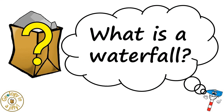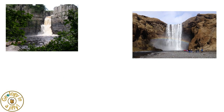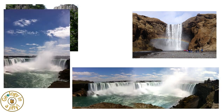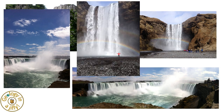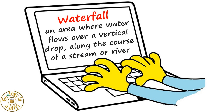What is a waterfall? When one thinks of a waterfall, we often think of sheets of water cascading over a cliff edge, the spray rising up around it, maybe forming a rainbow as the sunlight shines through it, such as at these locations from England, Iceland and Canada. If we looked in a dictionary, the term waterfall could be given as an area where water flows over a vertical drop along the course of a stream or river.